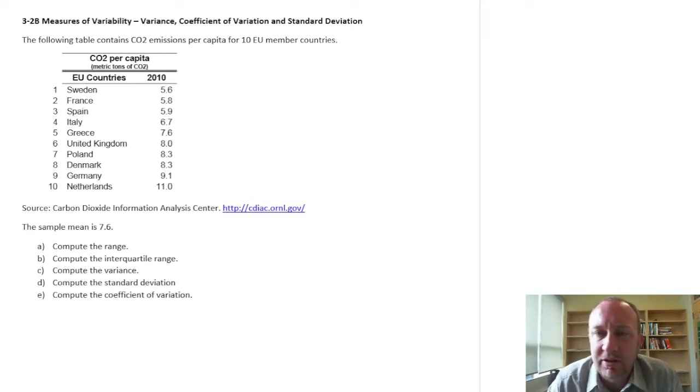We're looking at how observations within a data set are spread out. We've discussed in previous videos the mean as a measure of central location, and now when we look at measures of variability, we're looking at how those observations spread out around the mean. Are observations closely packed around the mean or widely spread out?